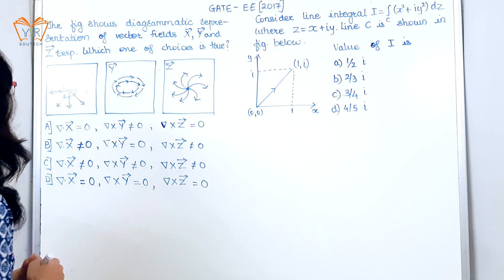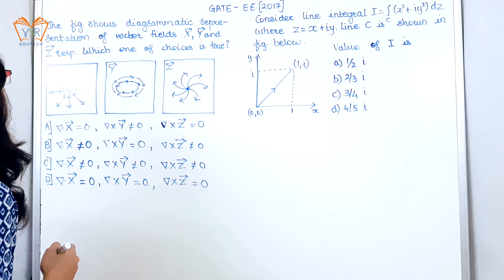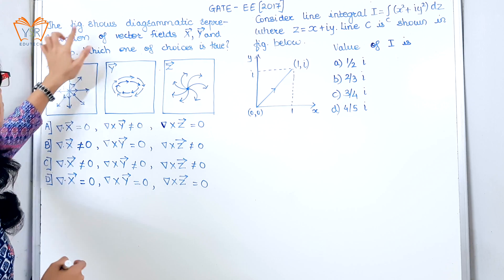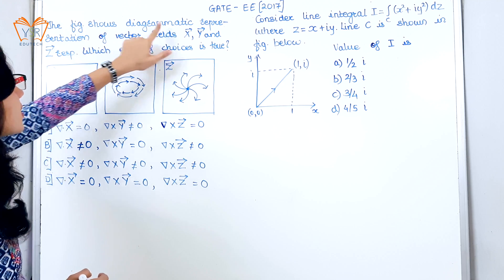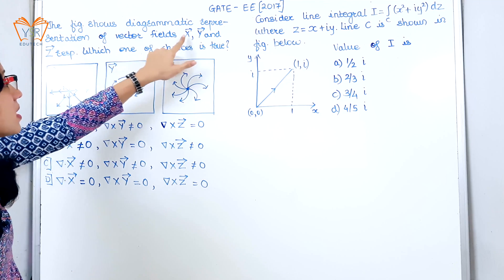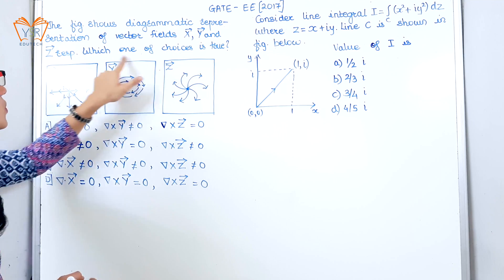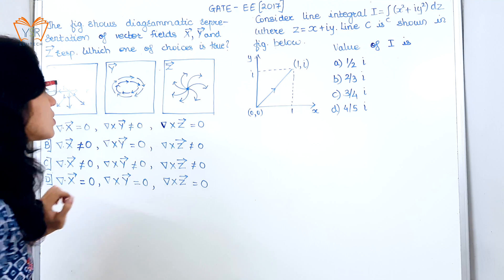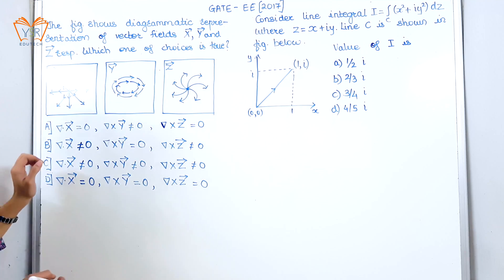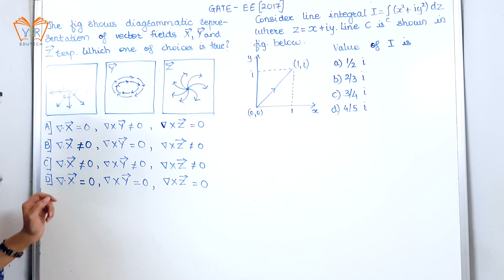Starting with the first example, the figure shows a diagrammatic representation of vector fields X, Y and Z. Which of the following choices is true? These are the following four choices.